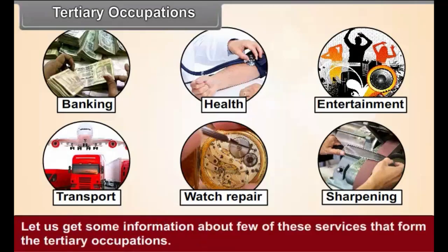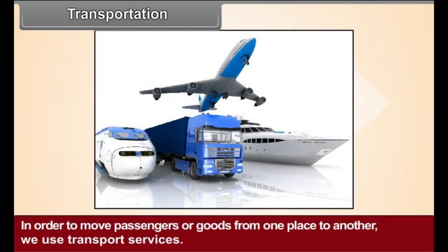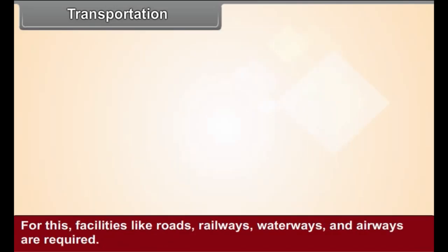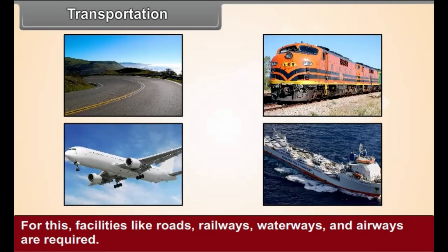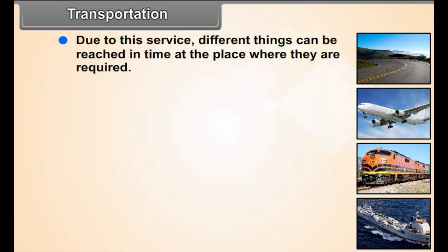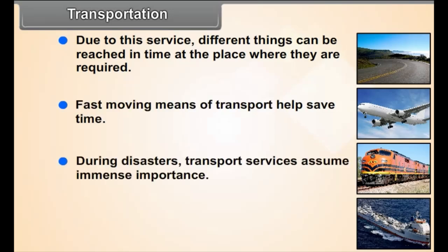Let us get some information about a few of these services that form the tertiary occupations. Transportation: in order to move passengers or goods from one place to another, we use transport services. For this, facilities like roads, railways, waterways, and airways are required. Due to this service, different things can be reached in time at the place where they are required. Fast-moving means of transport help save time. During disasters, transport services assume immense importance.